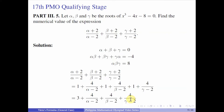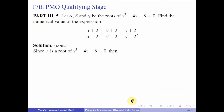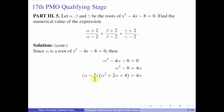We will use the fact that alpha is a root of x cubed minus 4x minus 8 equals 0. Since alpha is a root, plugging alpha into x gives alpha cubed minus 4 alpha minus 8 equals 0. Transferring negative 4 alpha to the other side gives alpha cubed minus 8 equals 4 alpha. The left-hand side is a difference of two cubes, so we can factor it: alpha minus 2 times alpha squared plus 2 alpha plus 4 equals 4 alpha.